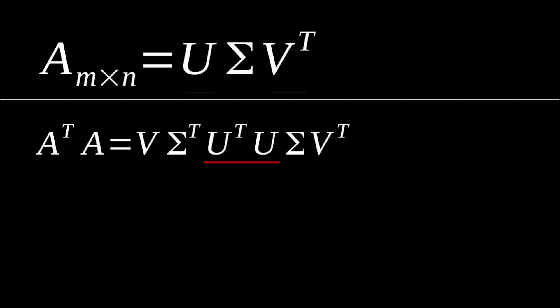Notice that we get a U transpose U right in the middle here, and our U matrix and V matrices are orthonormal matrices, meaning that it gives us back the identity matrix, so we will simplify this all down to being V sigma squared V transpose, because the transpose of a diagonal matrix is just itself.